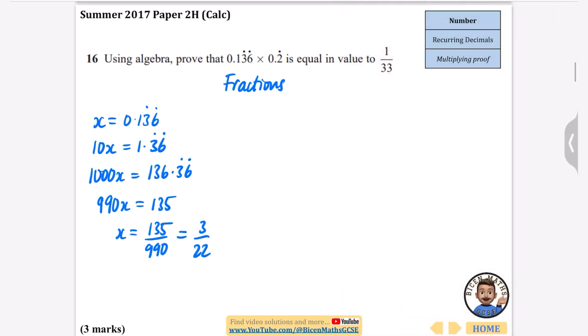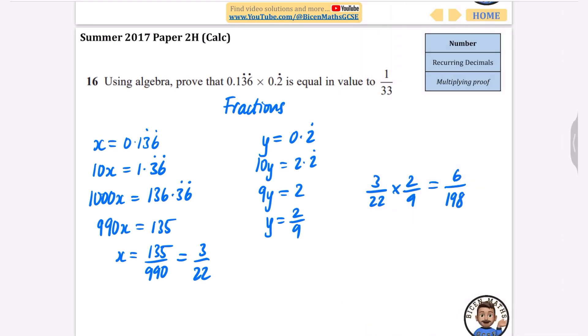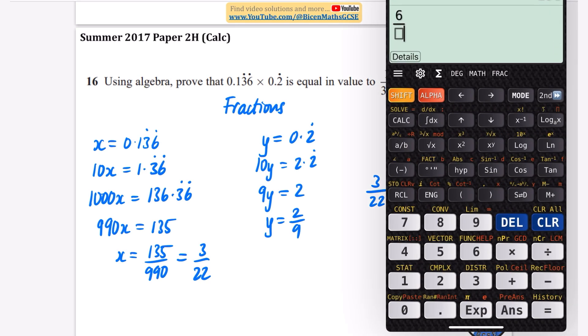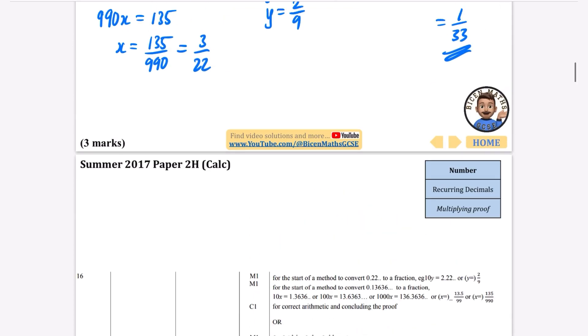When I subtract them and get 990x, I get 135. So x is 135 over 990, and because I've got a calculator I'm going to make it simplify that for me. I'm going to do 135 over 990, which is 3 over 22. Now I'm going to pick a different letter. y is 0.2 recurring, so 10y is 2.2 recurring. If I do 10y take away y, I just get 9y equals 2, which means y is 2 ninths. So when I'm doing 0.136 recurring times 0.2 recurring, I'm actually doing 3 over 22 multiplied by 2 over 9, which is 6 over 198.